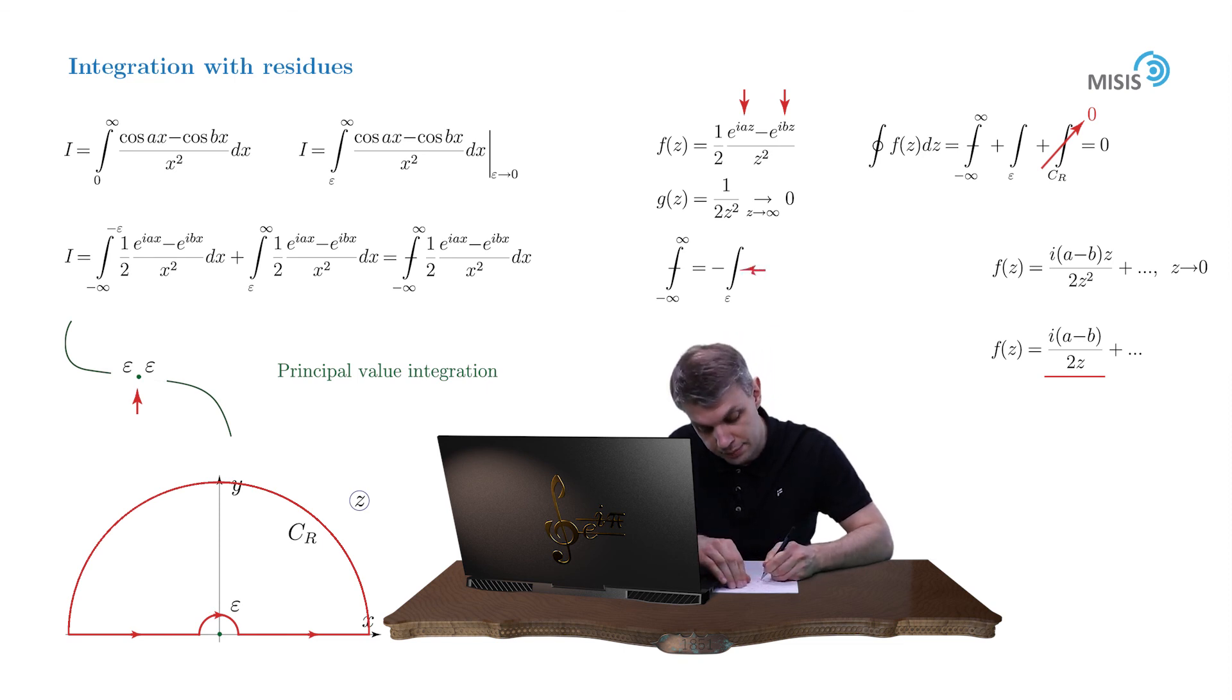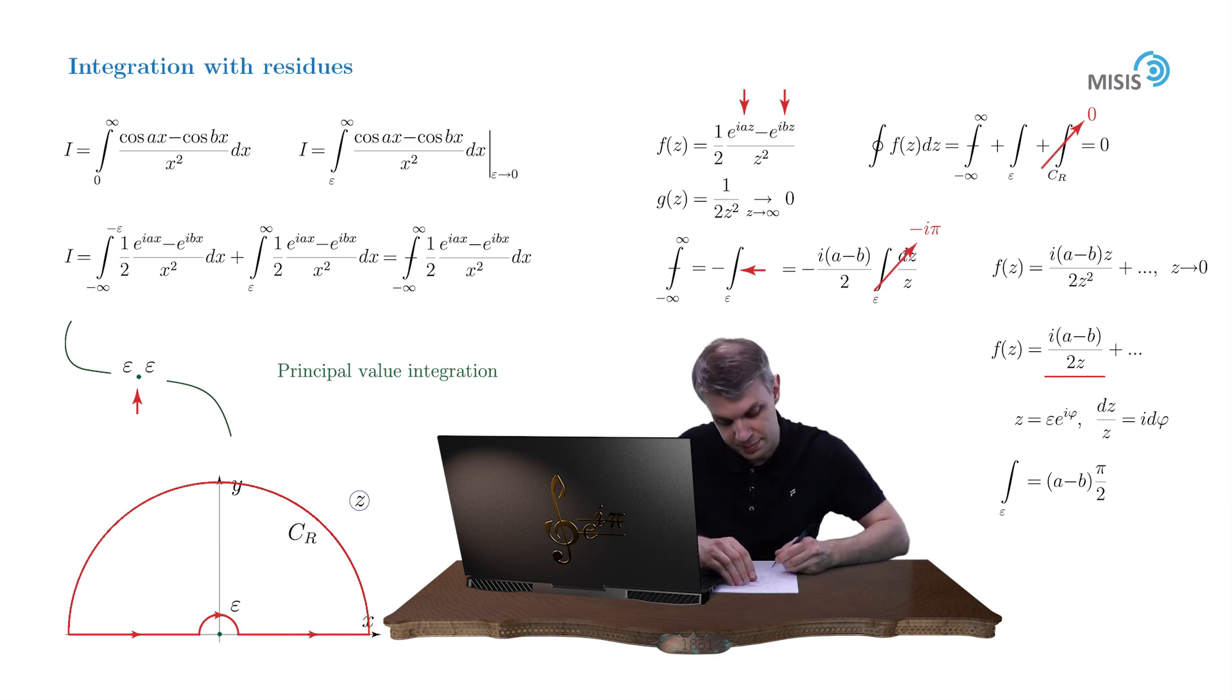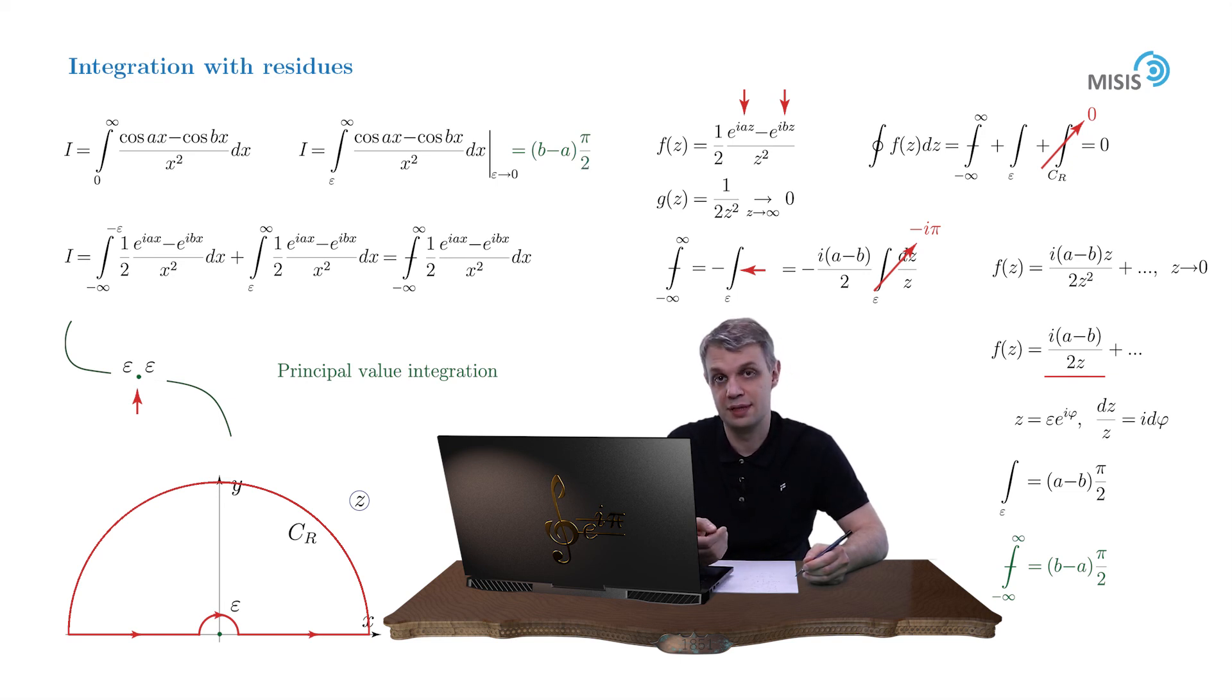Now let's plug in this expansion into our integral, and we will obtain minus i a minus b over 2 times the integral dz over z. And we introduce the standard parametrization z equals epsilon times e to i phi, and therefore dz over z is simply i d phi. And since phi changes from pi to zero, this integral is equal to minus i pi. So in the end, for our semicircular integral, we obtain the answer which is a minus b times pi by 2. And that's it. Our principal value integral is now expressed as b minus a times pi by 2, which is nothing but our initial integral. And the answer is luckily independent of epsilon. So we may set epsilon equal to zero and recover our original integral. And that completes our example.